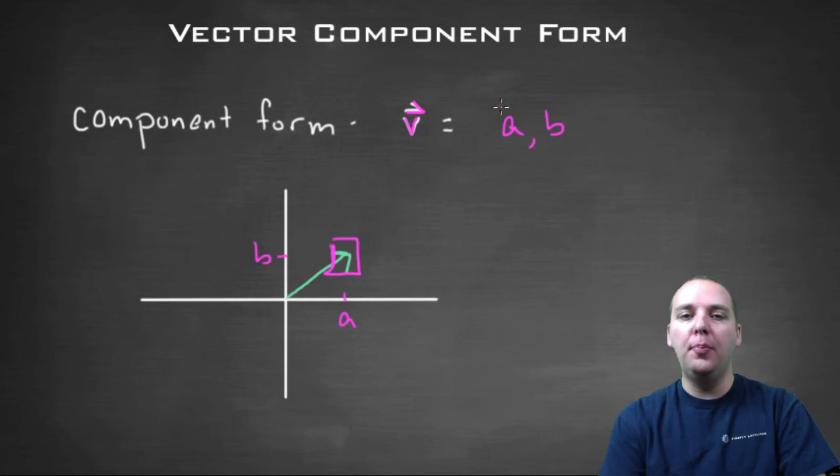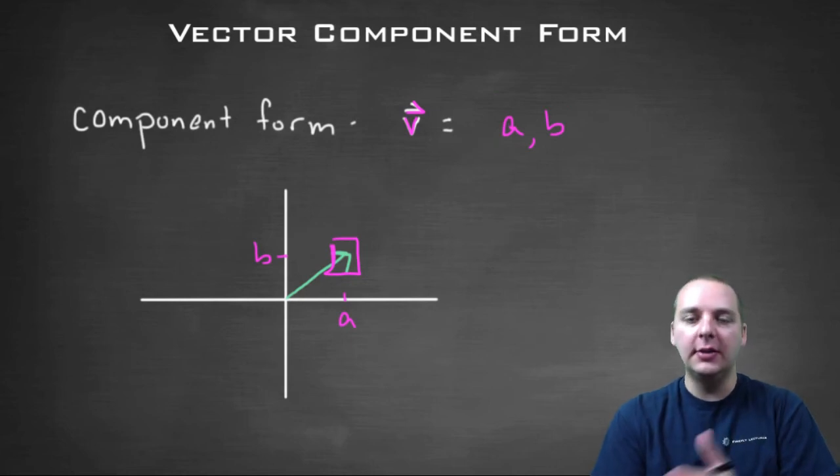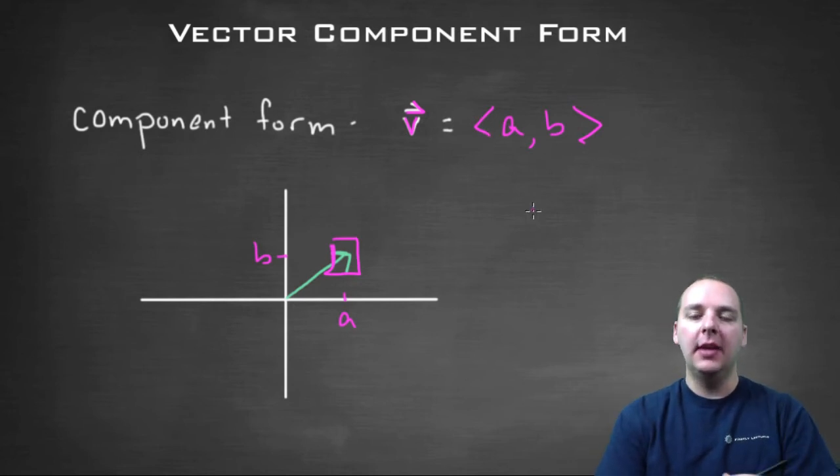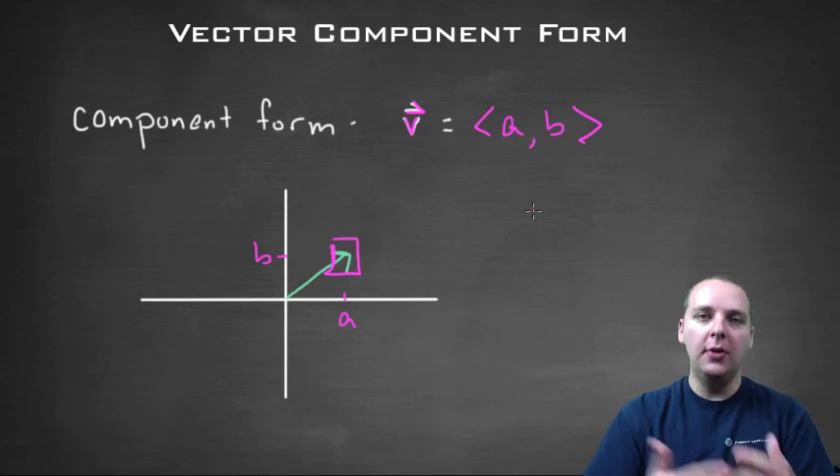But for point, as you know we put parentheses to represent a point. Well, to tell the reader that it's a vector instead of a point that we're trying to represent, we're going to put these things called angle brackets. So these angled brackets around the a and the b, and that is a vector represented in component form,